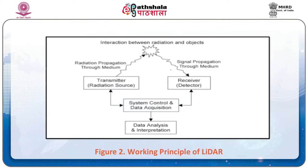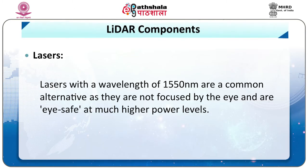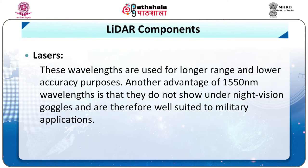The first component is lasers. Lasers are categorized by wavelength — 600 to 1000 nanometer lasers are most commonly used for non-scientific purposes, but as they can be focused and easily absorbed by the eye, the maximum power has to be limited to make them eye-safe. Lasers with a wavelength of 1550 nanometers are a common alternative as they are not focused by the eye and are eye-safe at much higher power levels. These wavelengths are used for longer range and lower accuracy purposes. Another advantage of 1550 nm wavelength is that they do not show under night vision goggles, making them very well suited for military applications.